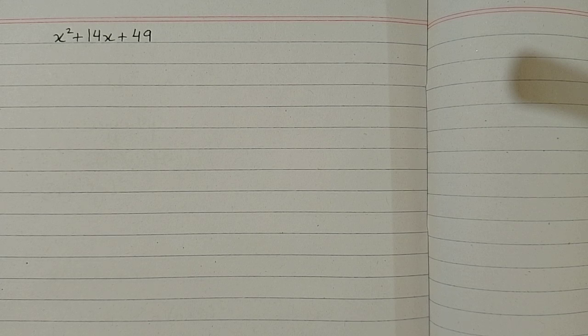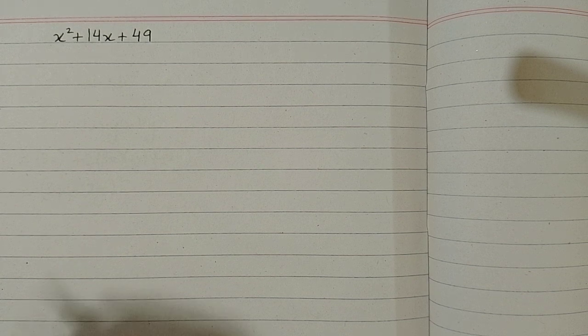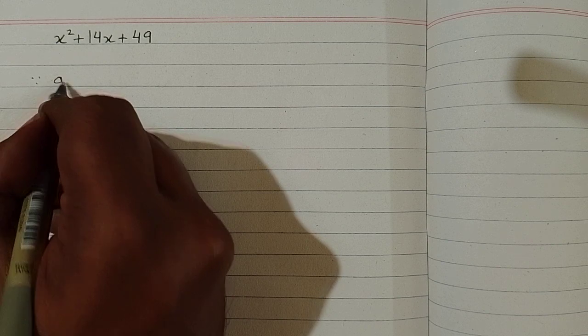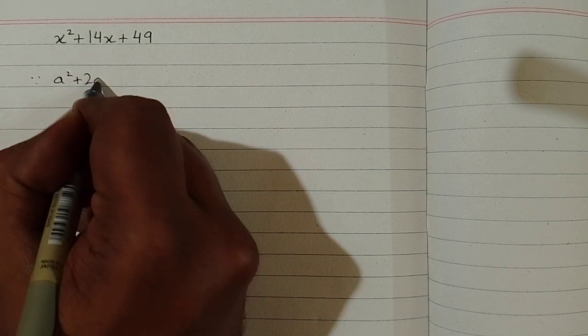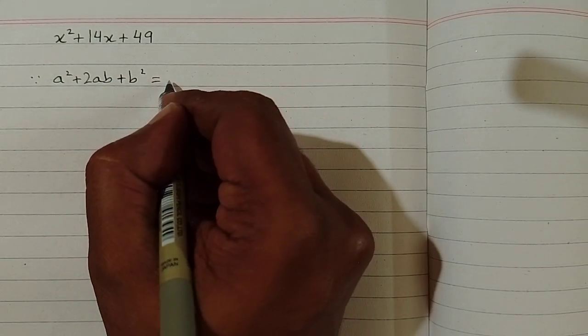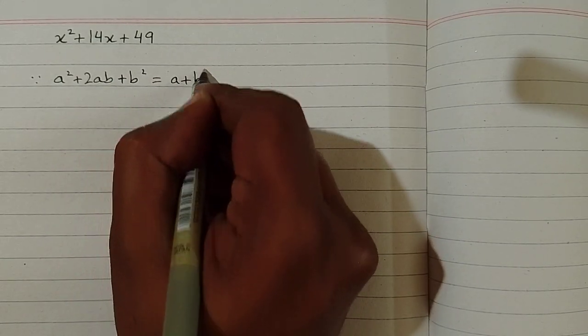In this video we will factorize an algebraic expression which is x² + 14x + 49. So we can use an algebraic identity which is a² + 2ab + b² is equal to (a + b)².